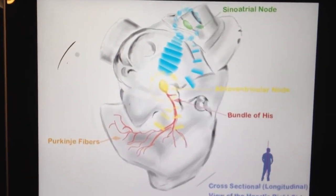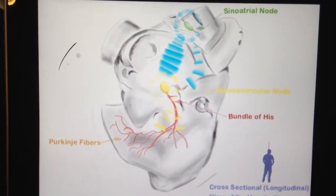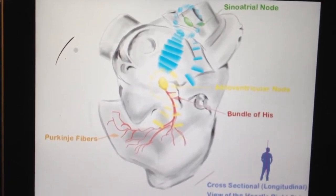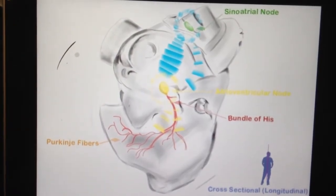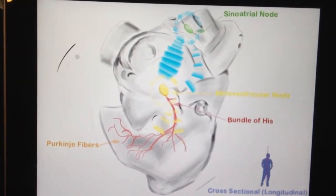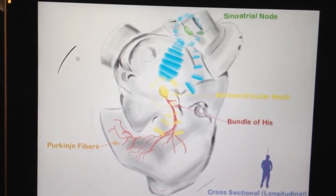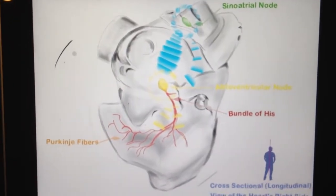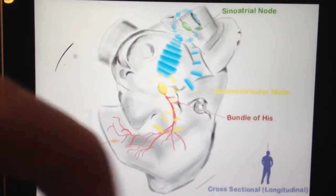That process is actually known as atrial kick. Interestingly, if for some reason the SA node was to be destroyed, damaged, or isn't functioning properly, the AV node actually acts as a backup prime pacemaker. It can carry on the pacing responsibilities of the SA node. So if the SA node is damaged, the AV node is a prime backup.